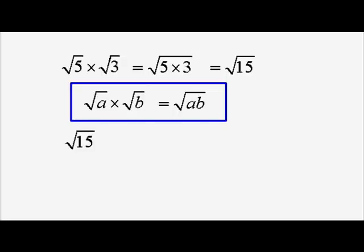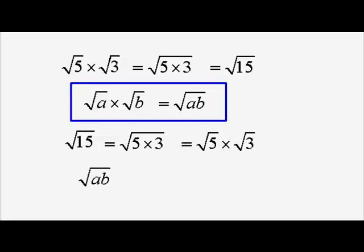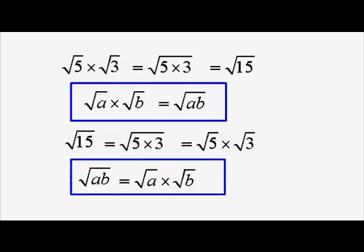Also, you can do it the other way. If you've got a number which can be split into parts, root 15 becomes root 5 times 3. We can then split the square roots into two square roots: root 5 times root 3. That's the same rule the other way around — root AB equals root A times root B — and once again it ought to be remembered.